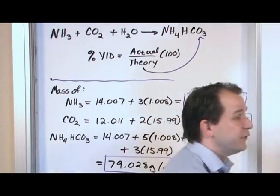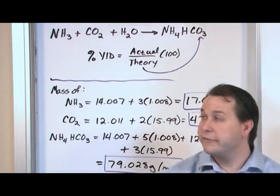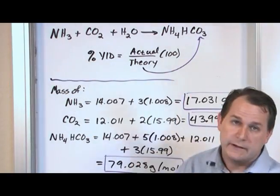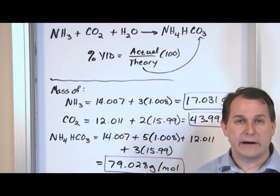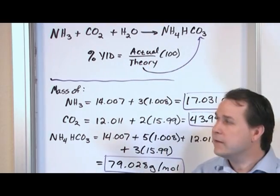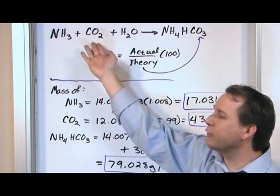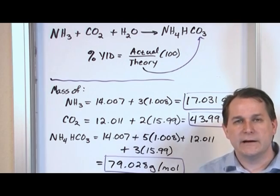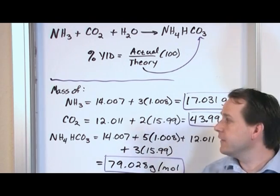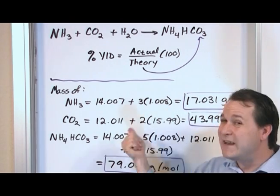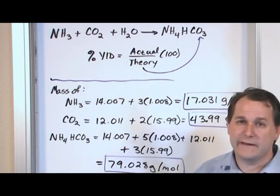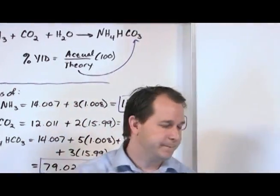What we need to do first is assume that ammonia is the limiting reactant, find out how much product we get under that assumption, then do the same thing for carbon dioxide, figure out which is truly the limiting reactant, determine the theoretical yield, and then plug it into the percent yield equation to find the answer.